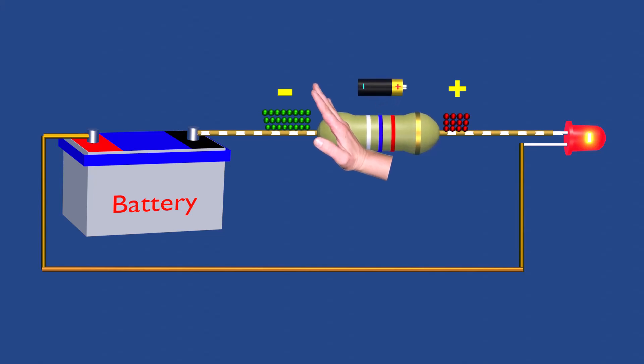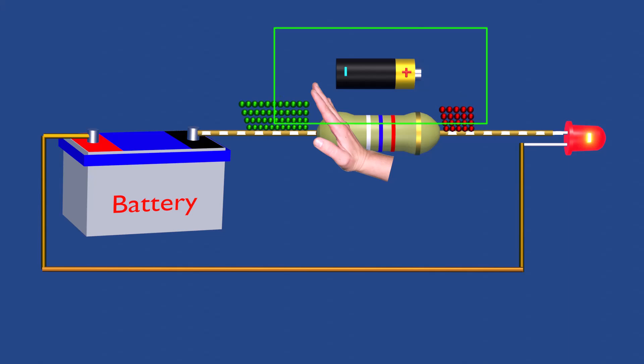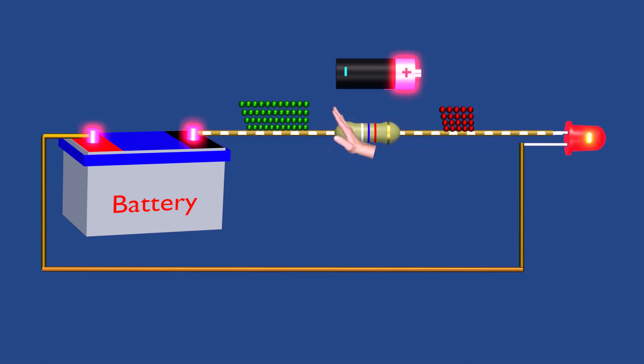The larger the resistor, the more it obstructs electron flow, leading to a larger voltage drop. The voltage drop is a portion of the applied voltage, and by adjusting the resistor's value, the desired voltage can be achieved across the load.